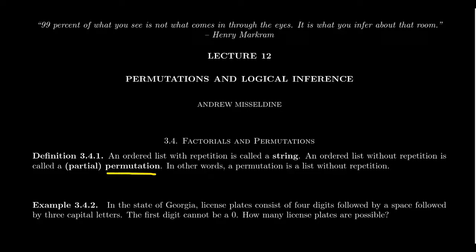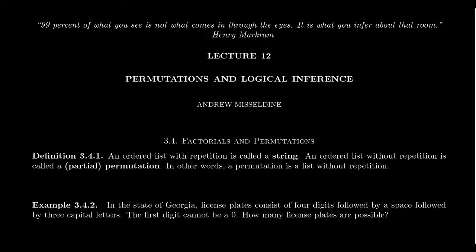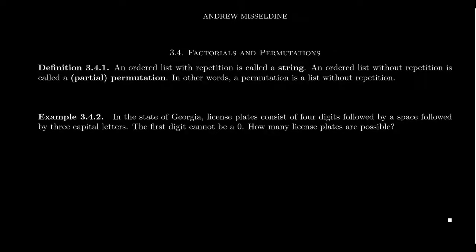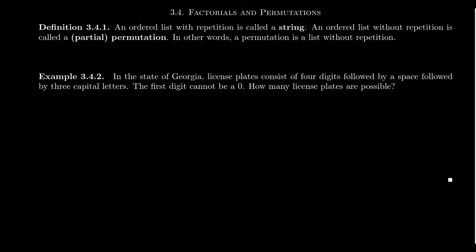To be technical, there are other meanings of permutations in mathematics, but at this stage people often use the term permutation to describe this ordered list without repetition. We might actually use the word partial permutation because the permutation doesn't necessarily include every element of the alphabet we're drawing from, but typically we'll refer to this just as a permutation. As we've looked at multiplicative counting principle problems before, we've been trying to count strings and permutations.